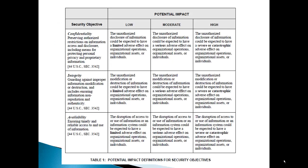Here we have some potential impact definitions. In the U.S. Code they define confidentiality, integrity, and availability, and then in the matrix they define the potential impact for the low, moderate, and high columns — what the particular criteria is for the impact of one of these events occurring.